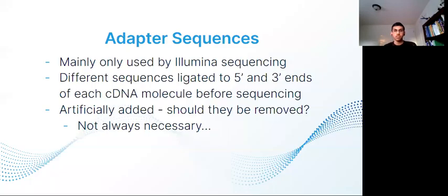The next thing to look into is adapter sequences, which are mainly used by Illumina and include different sequences ligated to the five-prime and three-prime ends of each cDNA molecule before sequencing. Removing them from reads computationally is very time-consuming, and research shows that only about 0.2% to 2% of the actual reads contain adapter sequences. So this has caused controversy on whether this step is necessary or not.